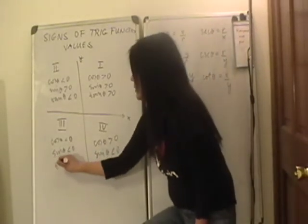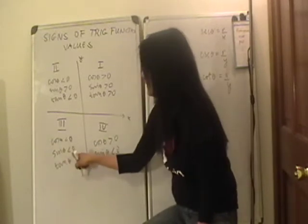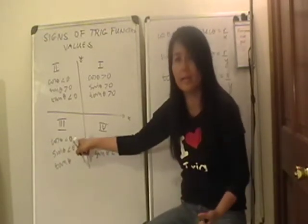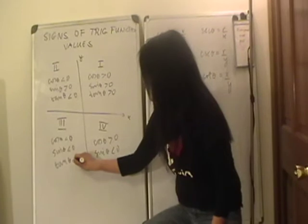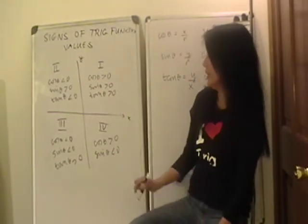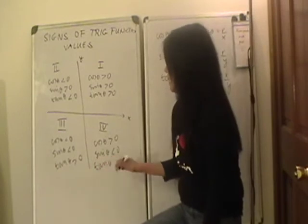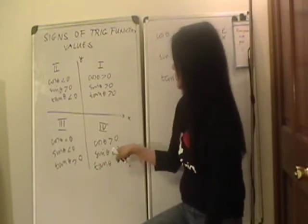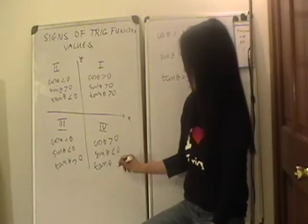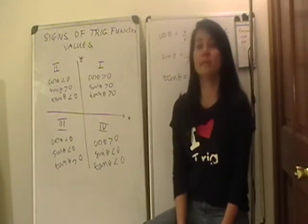In the third quadrant, sine over cosine: negative divided by negative is positive — so tangent is positive. And in the fourth quadrant, the quotient of a negative over a positive: negative divided by positive is negative.